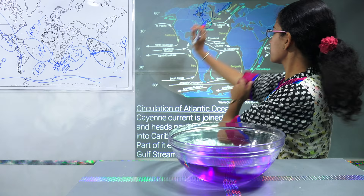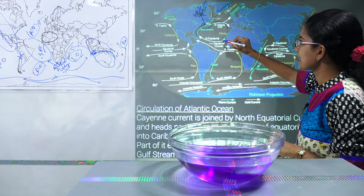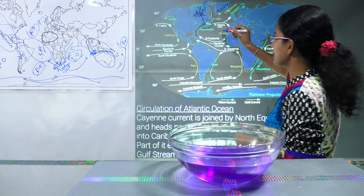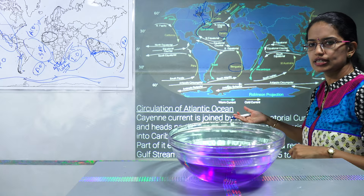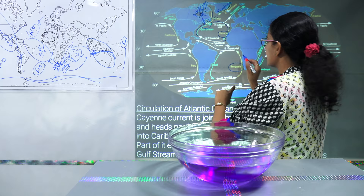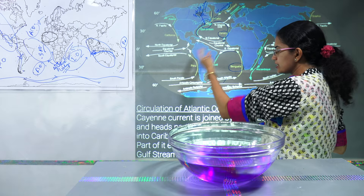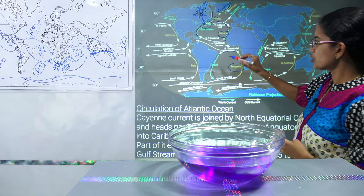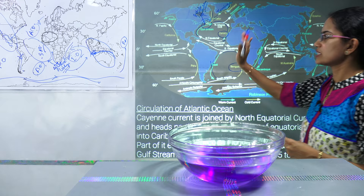Then the circulation completes with the Canary Current, which is a cold current running from the European region. Counterpart to the Canary Current in the north Atlantic, you have the Benguela Current in the south Atlantic, which is again a cold current. In the south you can see a kind of anticlockwise circulation, and on the east of South America you have the Brazilian Current. So the south has anticlockwise circulation and the north has clockwise circulation.